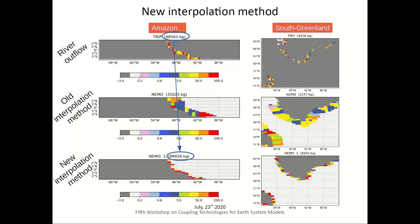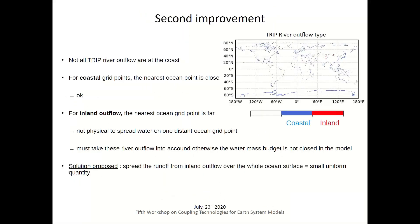Here I show examples on two domains: south Greenland on the right and the Amazon River on the left. The first row is the river outflow, the second row is the old interpolation method (distance-weighted plus global conservation), and the third row is the new interpolation method with only one neighbor. The total water integrated over the domain shows that conservation is not perfect for open domains, but for a closed domain such as Iceland, there is perfect conservation.